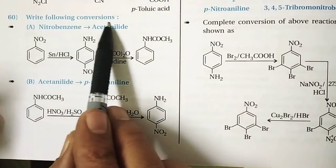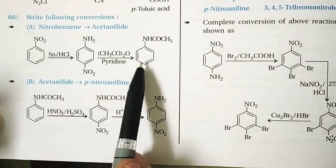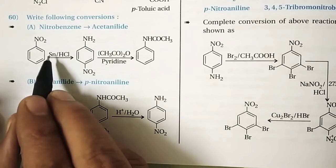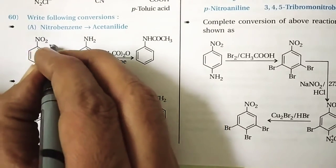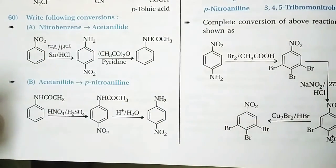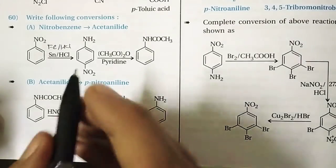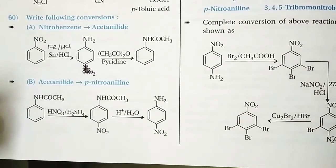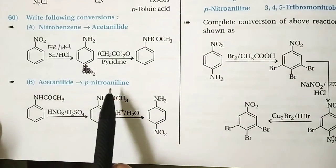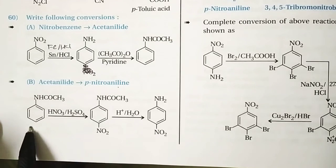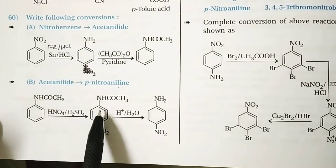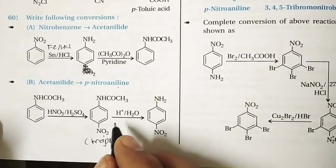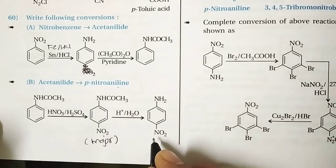Question 60: Convert nitrobenzene to acetanilide, and acetanilide to paranitroaniline. First, nitrobenzene is reduced using Sn/HCl or Fe/HCl to give aniline. Aniline is then acetylated to give acetanilide. To convert acetanilide to paranitroaniline, acetanilide is first nitrated (giving ortho and para products, with para as major), followed by acid hydrolysis to give paranitroaniline.